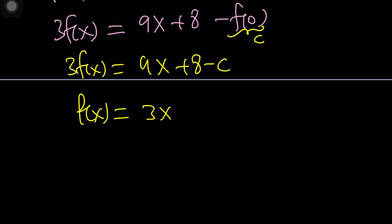Let's go ahead and divide both sides by 3 now. That gives us f of x equals 3x plus 8 minus c divided by 3. Now, we've got f of x. Pretty close, right? I mean, all we have to do is find c.